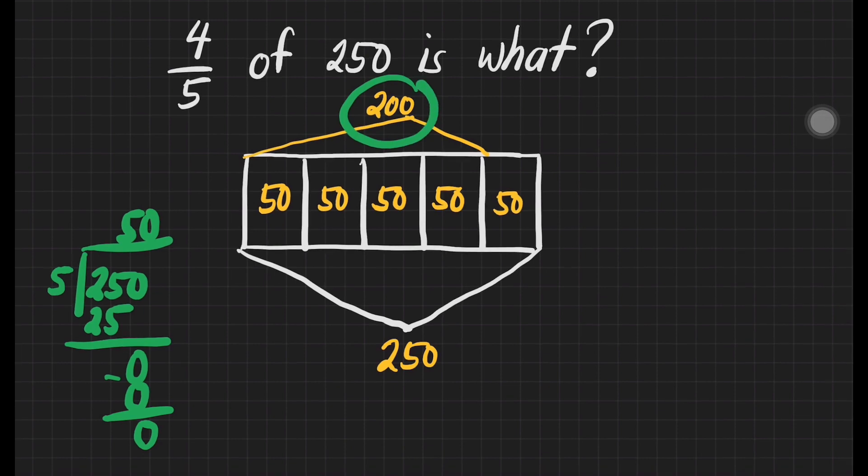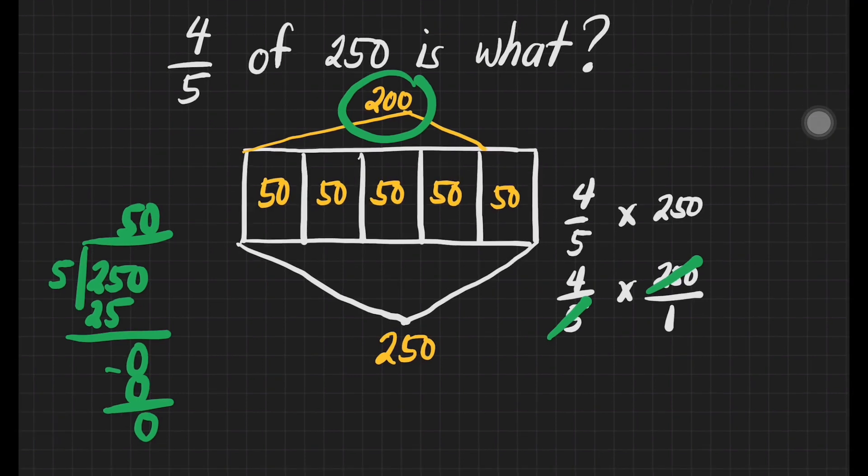We can have another way of solving this. It's going to be 4 fifths times 250, or we may write 4 fifths times 250 over 1. Then, we can already multiply, unless if there's something that we can cancel. Yes, there's something that we can cancel. 5 and 250. What number can we divide both 250 and 5? That's 5. 5 divided by 5 is equal to 1. 250 divided by 5 is equal to 50.